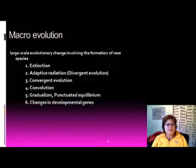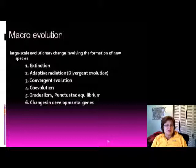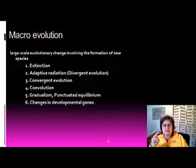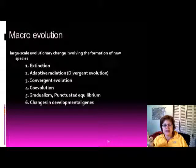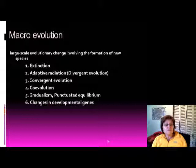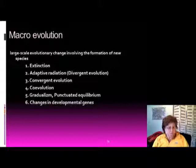The next thing we have to talk about is macroevolution, which is the large-scale evolutionary change involving the formation of new species. The steps we have to talk about are: extinction, adaptive radiation, convergent evolution, co-evolution, gradualism, and changes in developmental genes.